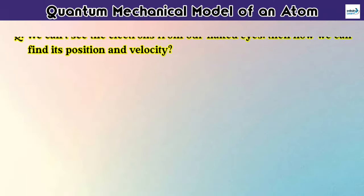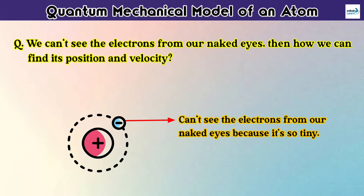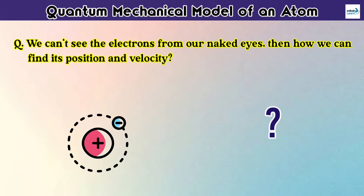Now the question is, that we can't even see the electrons from our naked eyes, then how is it even possible to find the position and velocity of an electron? So now let's take an example.